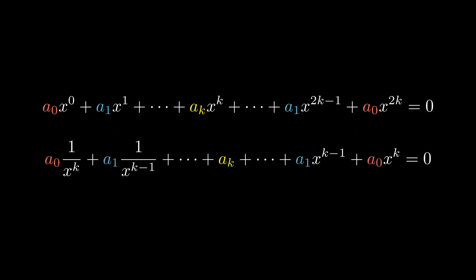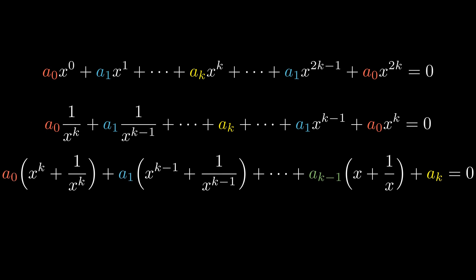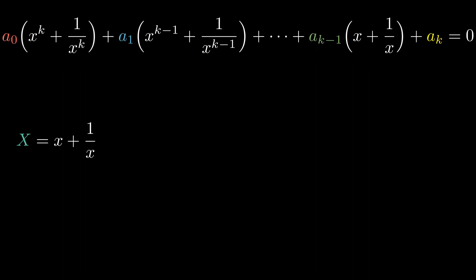which in this case is x to the power of 2k divided by 2, or simply x to the kth power. Then factor out the terms with the same coefficient. And finally, do the variable change.